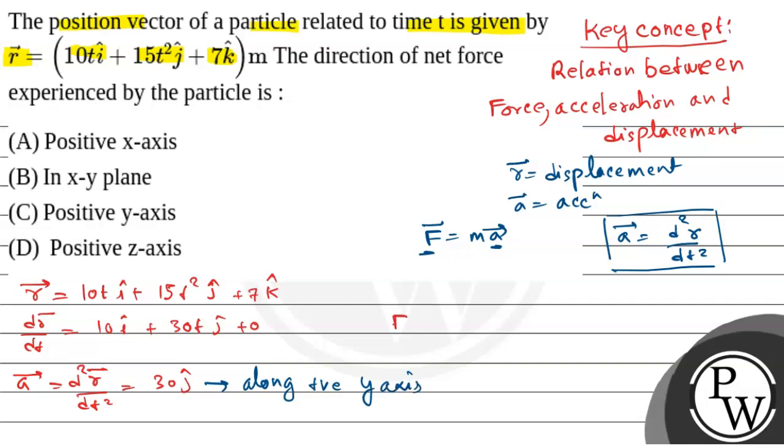Now force is what? Force is basically mass into acceleration. Now mass is scalar. That means acceleration, which direction is the acceleration, the force will also be in the positive y-axis. That means our option C is correct, that is positive y-axis.